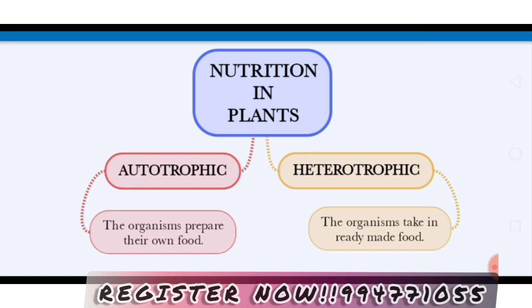The definition: autotrophic organisms are those organisms that prepare their own food. Heterotrophic organisms are those organisms that take in ready-made food.